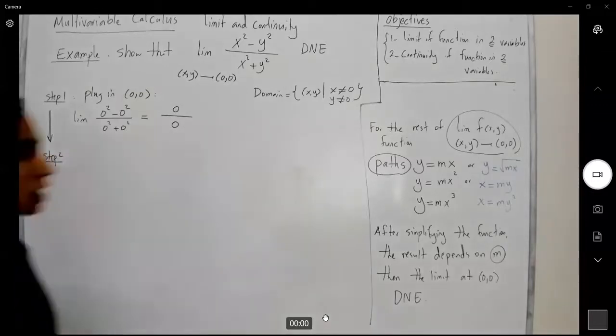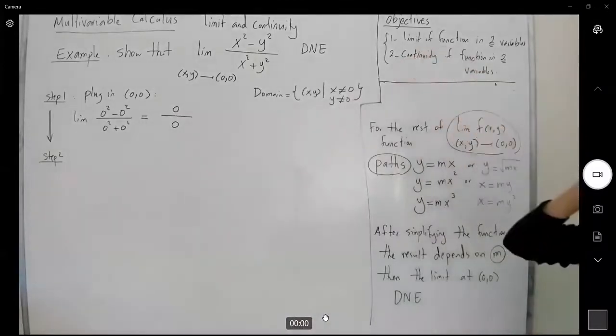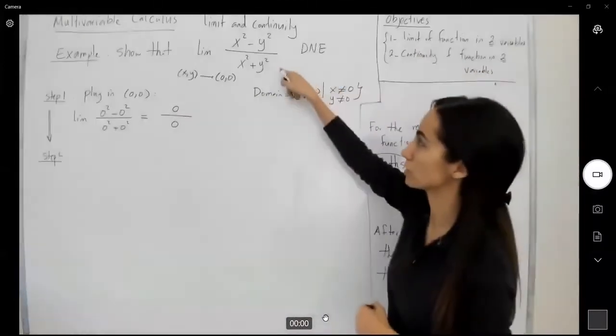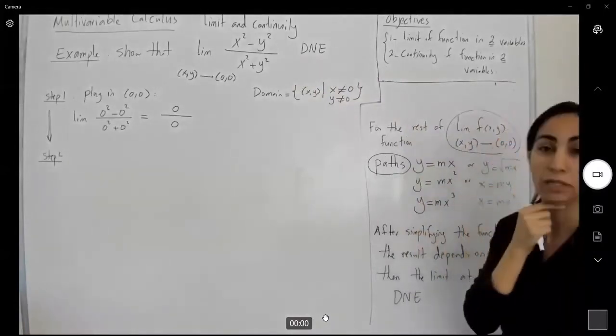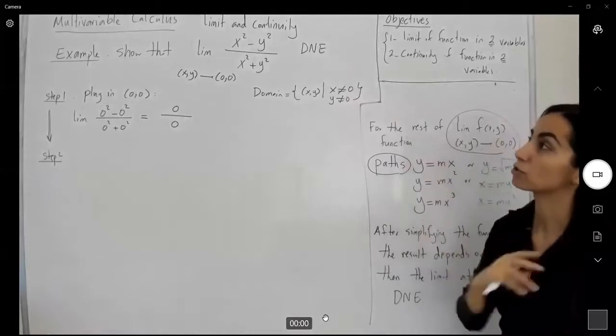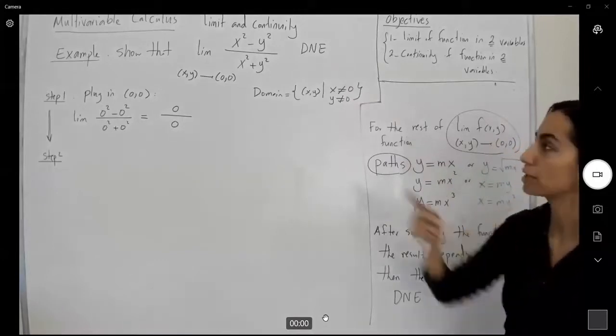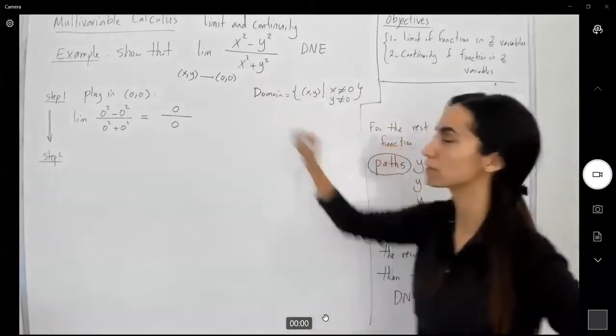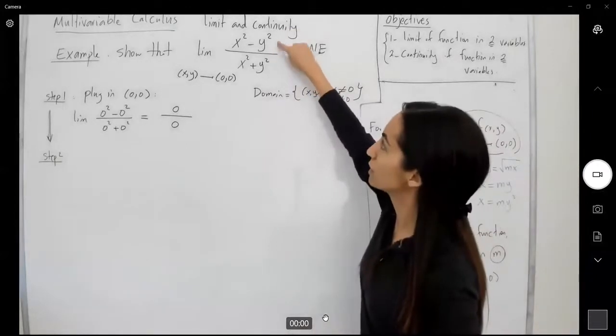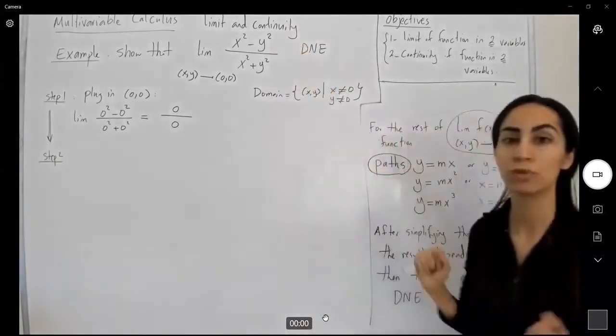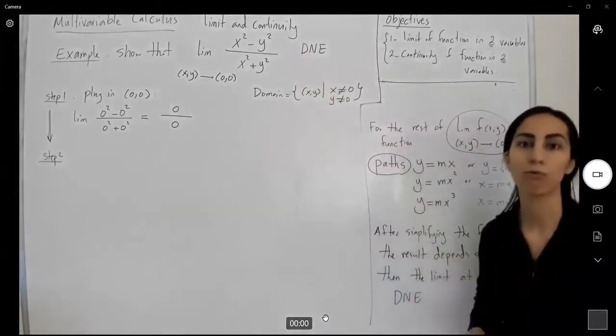In step two, try to simplify this rational function. Can you simplify this? Is there any way that we can write the numerator in factor form and get some common elements? There is no way. Because in the denominator, I have x squared plus y squared. There's no way I can write it in factor form, and I don't have any common factor between numerator and the denominator. So simplifying doesn't work here for me.